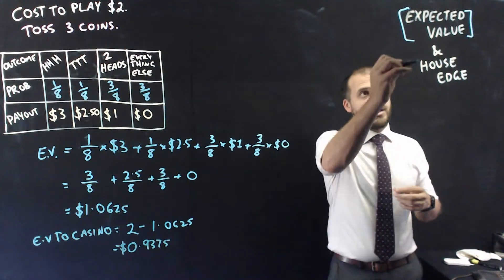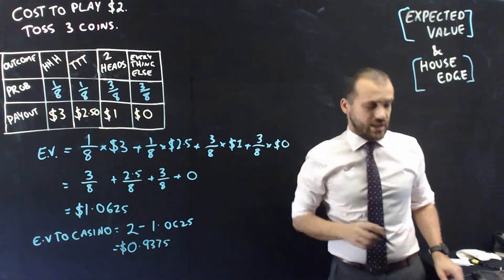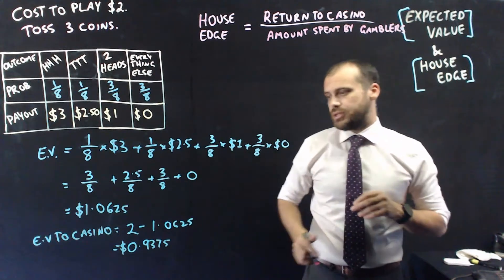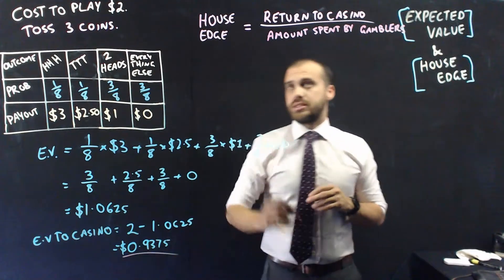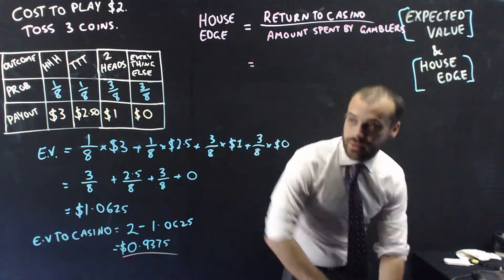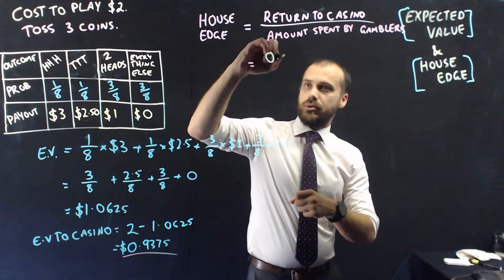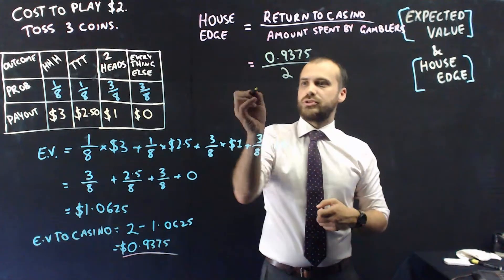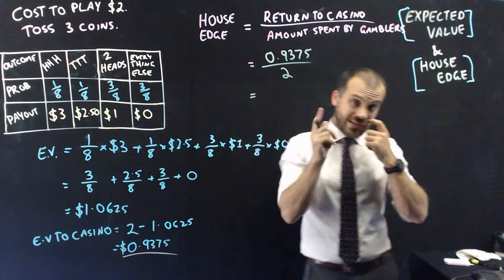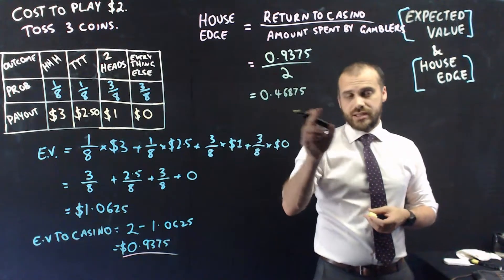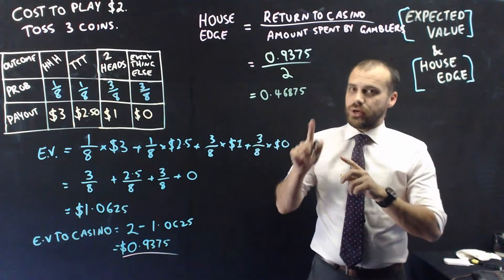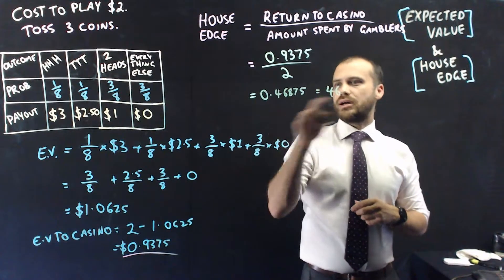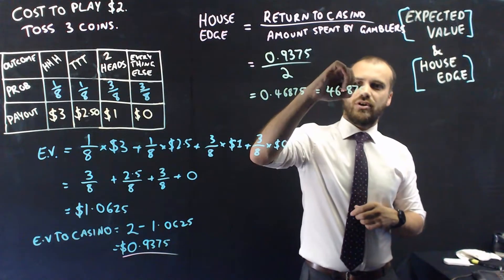To see how impressive, now let's talk about something called house edge. So, formula for house edge: return to casino divided by amount spent by gamblers. Now, the return to the casino is this number here, 0.9375, and the amount spent by gamblers is the cost to play, $2. If I type that into my calculator, I get 0.46875. This is never expressed that way. It's always expressed as a percentage.